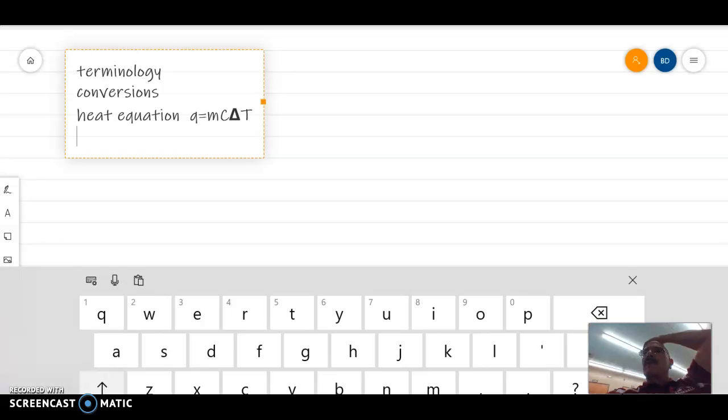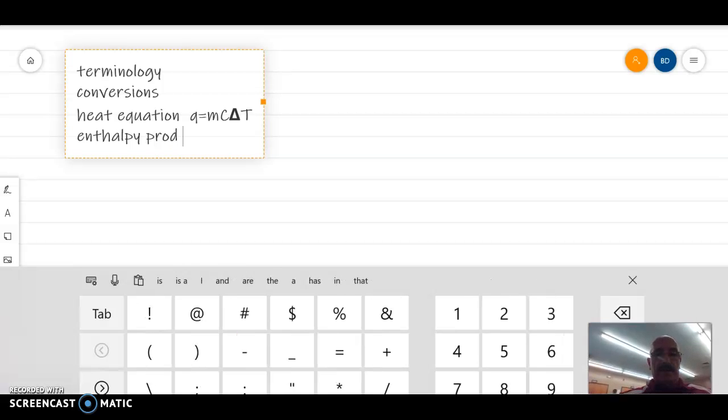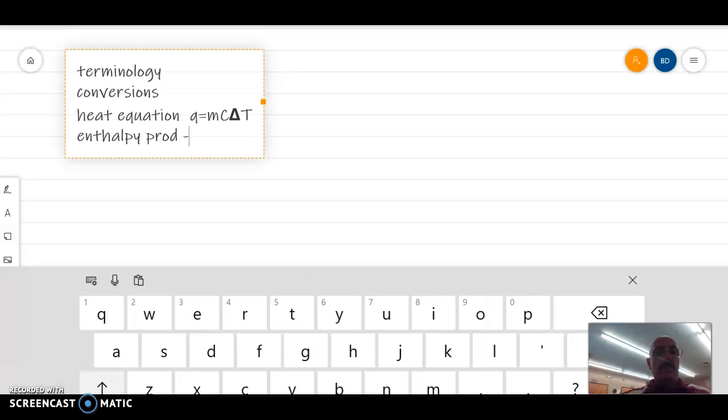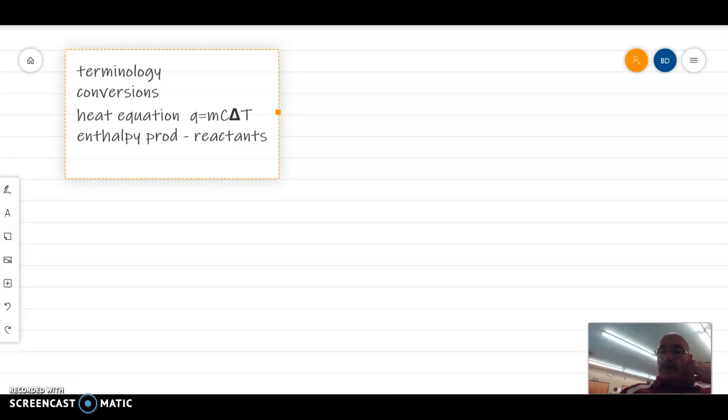Remember that the enthalpy of reaction is always the final minus the initial, which is products minus reactants. And, then we talked about enthalpy change for reaction and how it's positive if it's endothermic and it's negative if it's exothermic.